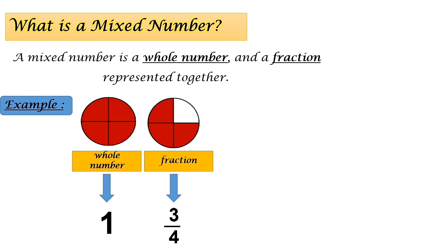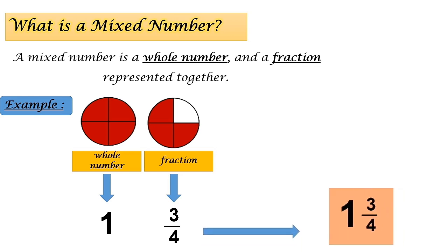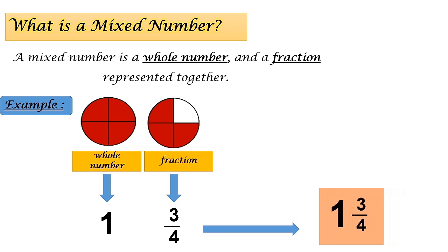So how do we write a mixed number? We write it by representing the whole number and the fraction together. So one and three quarters is a mixed number.